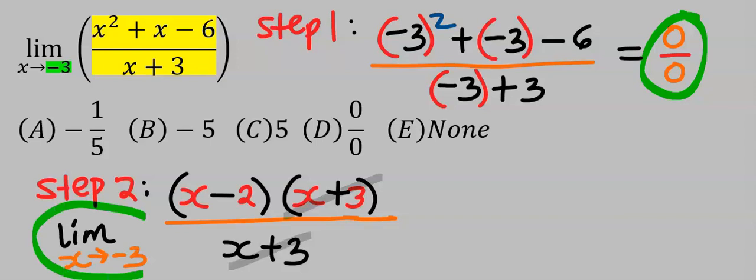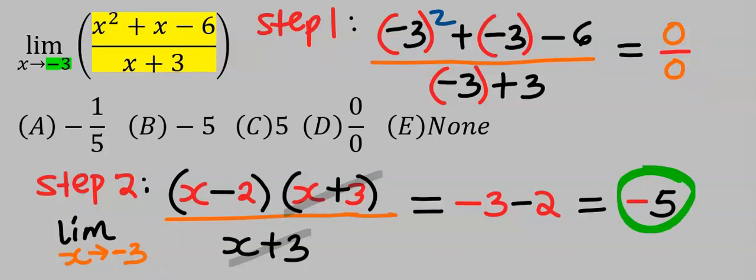As x tends to minus three, minus three minus two will give you minus five, and your answer is B.